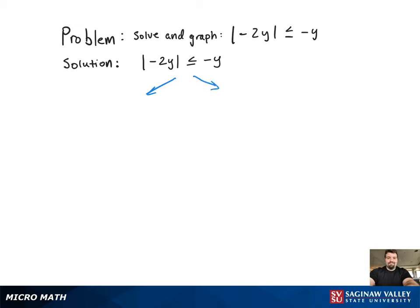Since the absolute value is solved for in this problem, we can go ahead and separate this into two separate inequalities. The thing that's important here is that since it's less than or equal to, it's an AND statement. That's going to be important in understanding the solution to this problem.